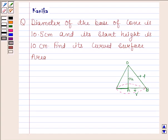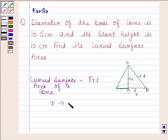Now we should know the formula for finding the curved surface area of a cone. Curved surface area of a cone is equal to πRL where R is the radius of the cone and L is the slant height of the cone.